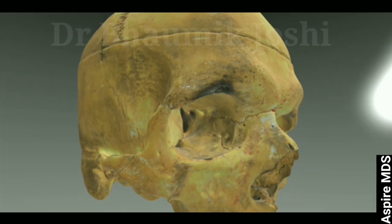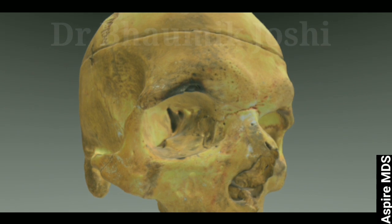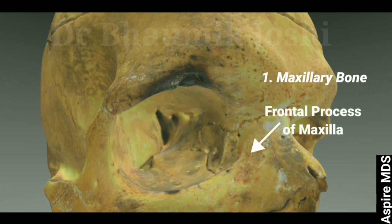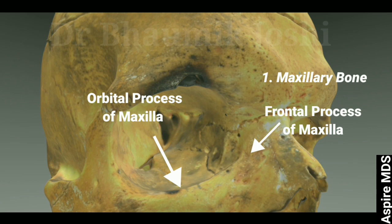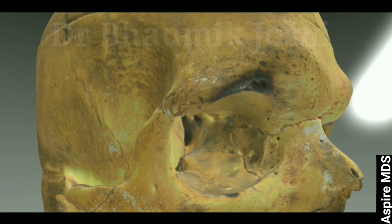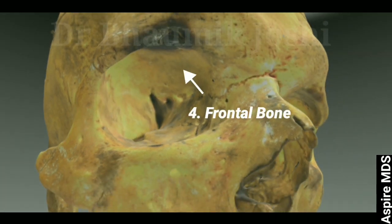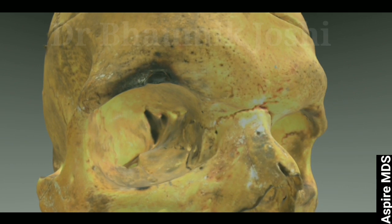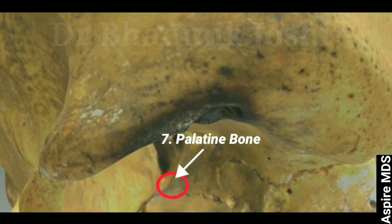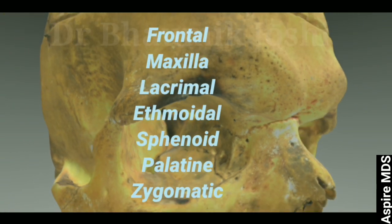Before studying the fracture line of LeFort III, it is important to know the anatomy of the orbit. The orbit is made up of seven bones: the maxillary bone — with both the frontal and orbital processes of the maxilla — the lacrimal bone, the ethmoid bone behind the lacrimal, the frontal bone on the roof, the sphenoidal bone posteriorly, the zygomatic bone laterally, and the palatine bone — a tiny bone between the maxilla and sphenoid.